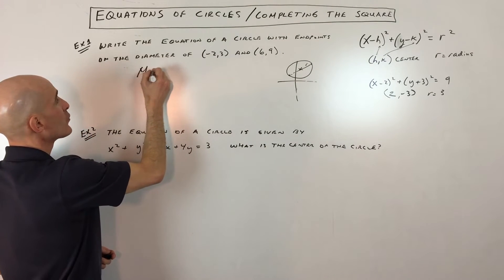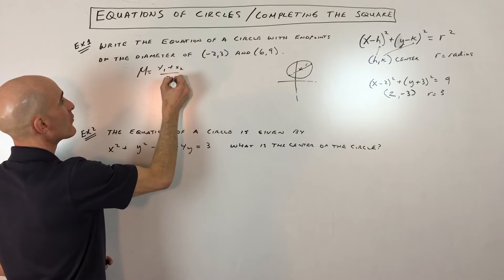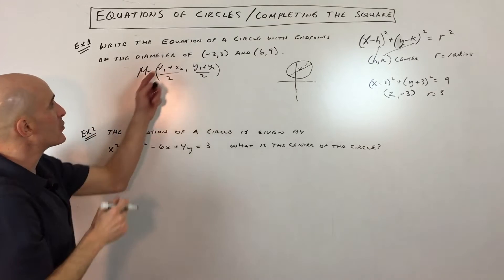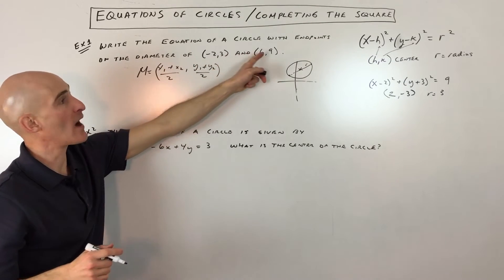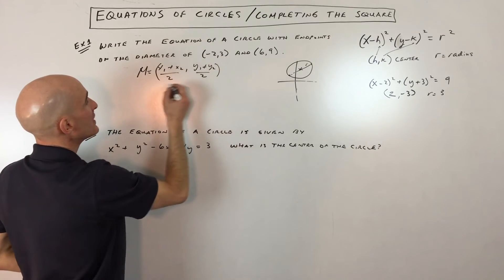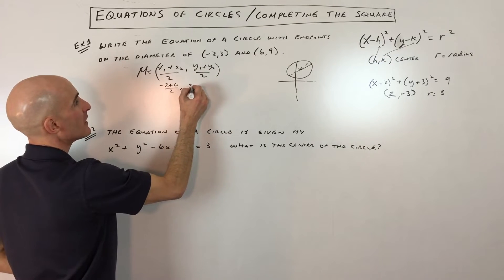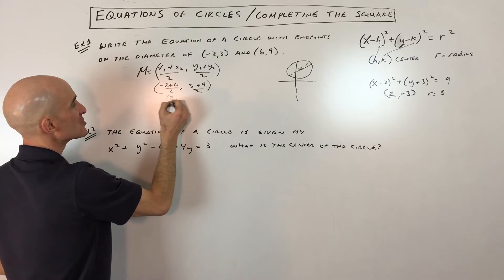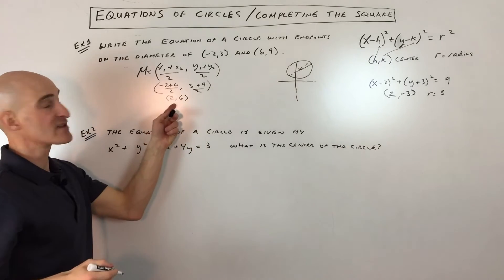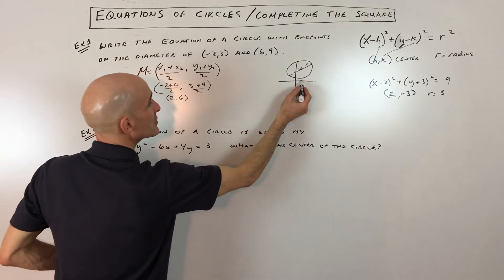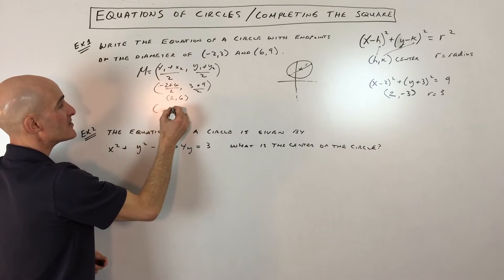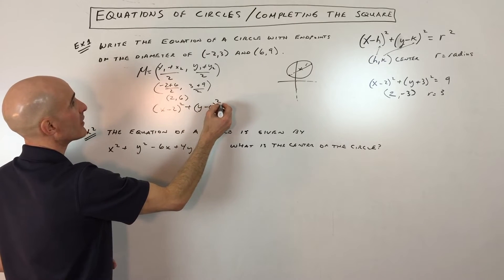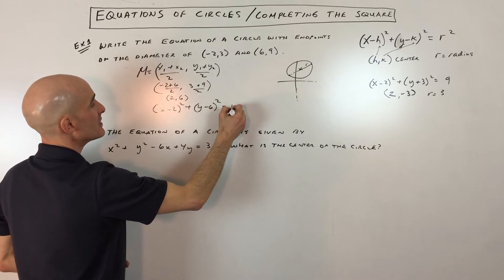The midpoint formula is the average of the x's and the average of the y's — you add the x coordinates and divide by two, add the y coordinates and divide by two. So we get (negative two plus six) divided by two, and (three plus nine) divided by two, which simplifies to four over two, which is two, and twelve over two, which is six. So the center of our circle is at two comma six. Our equation so far is (x minus two) squared plus (y minus six) squared equals r squared.